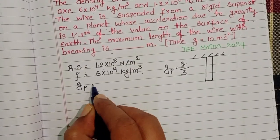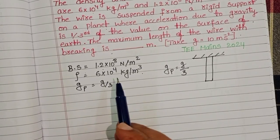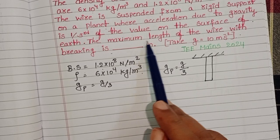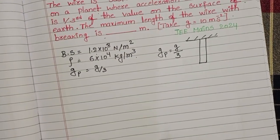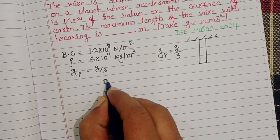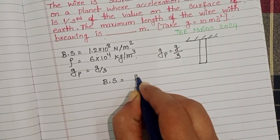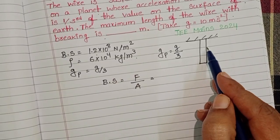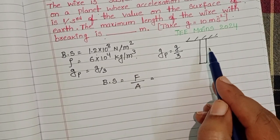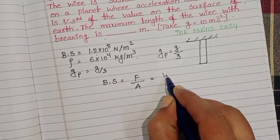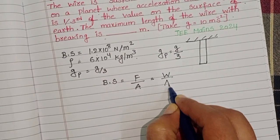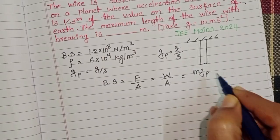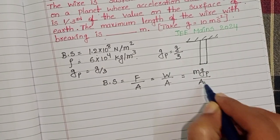Acceleration due to gravity on the planet is g by 3. By using this information, we have to find out the maximum length of the wire. Breaking stress equals force by area of cross section. The force applied on this wire is nothing but due to its own weight, so weight by area of cross section. Weight equals mass into acceleration due to gravity by area of cross section.